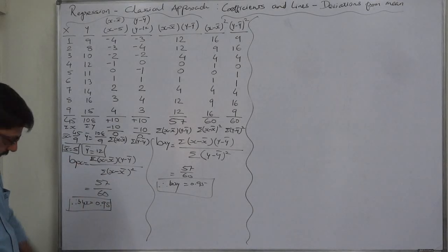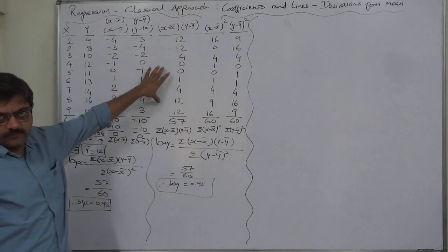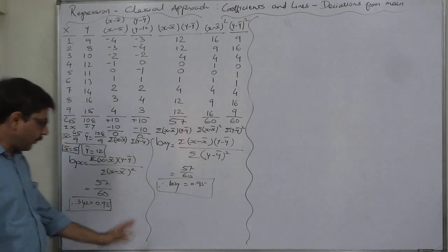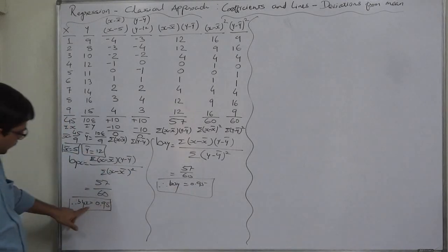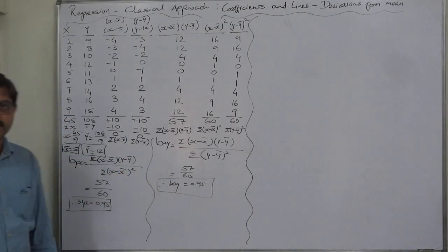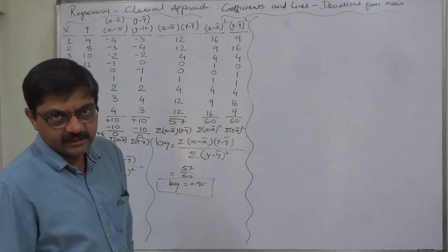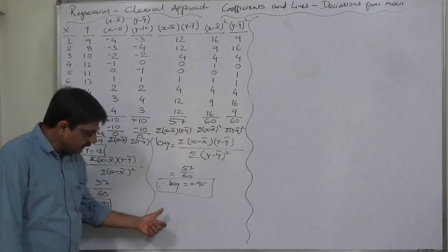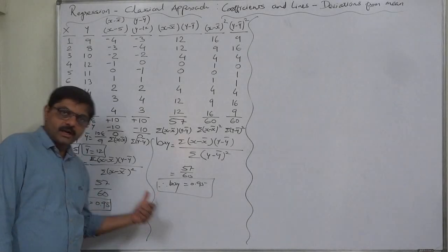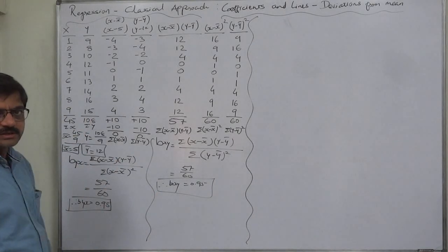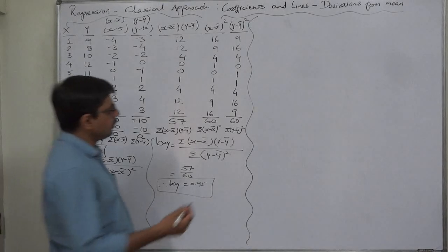Since byx and bxy are both 0.95, their geometric mean is also 0.95, meaning the coefficient of correlation for this data is also 0.95 and positive, because both regression coefficients are positive. We know the important property that the sign of the coefficient of correlation and the coefficients of regression is always the same.